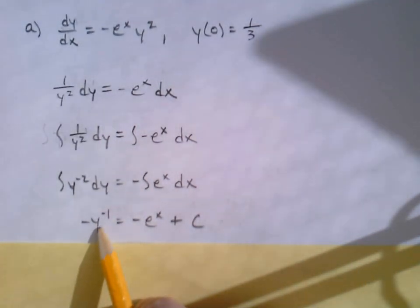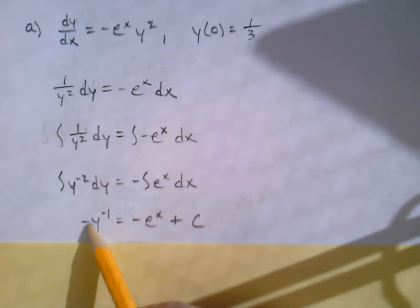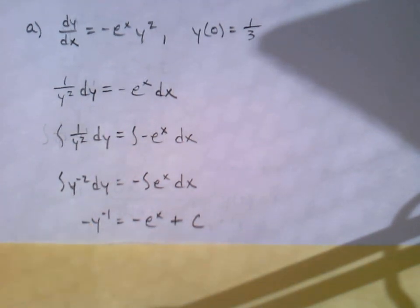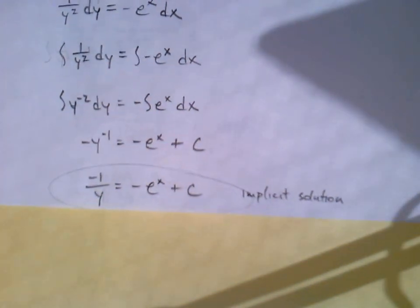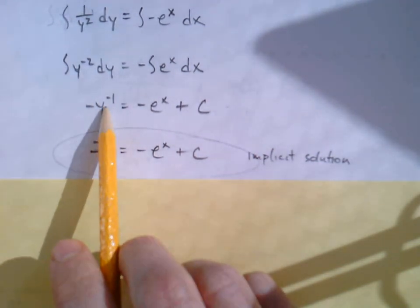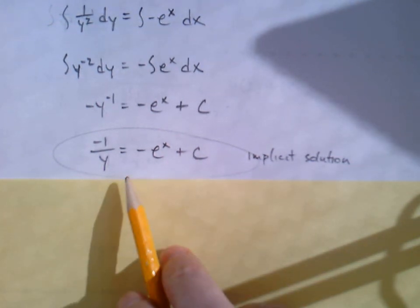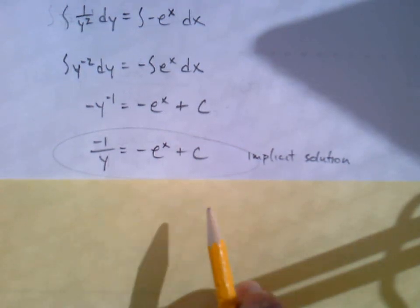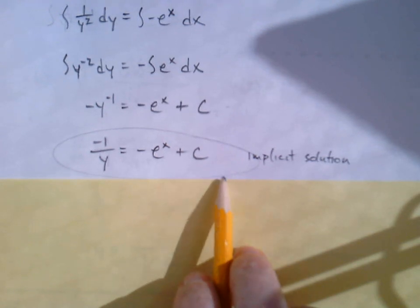The moral of the story is we only add the C on the x side because in the end we'd really prefer to isolate y, so we'll put that C over here. Can we clean this up a little bit? I just converted this to a fraction, left everything the same. This is a solution - an implicit solution because we have not solved for y yet.